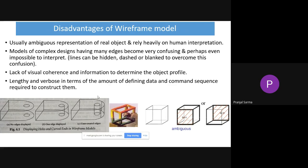Some disadvantages are also associated with wireframe models. Generally, ambiguous representation of different objects might be there. Depending on who is visualizing or perceiving the wireframe model, we can have difficulties — for example, as we gave with the cube: depending on how you visualize it, you may get puzzled about which is the front face. So this kind of ambiguity is there.